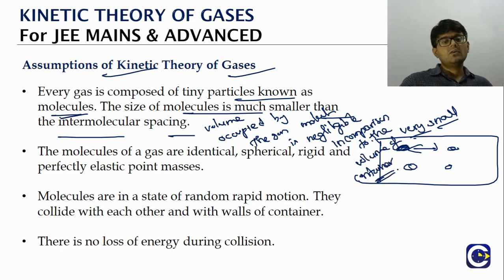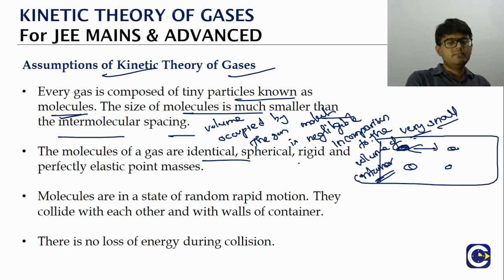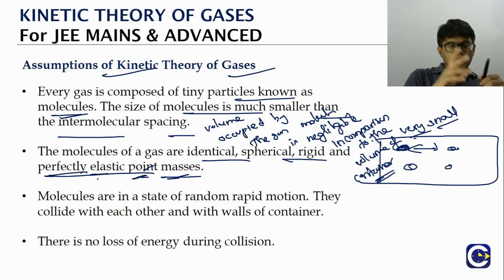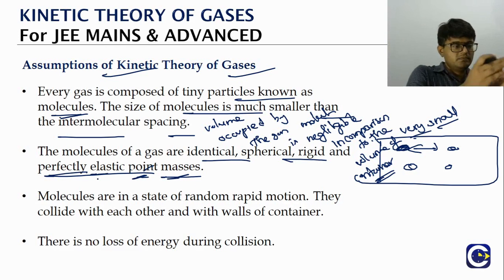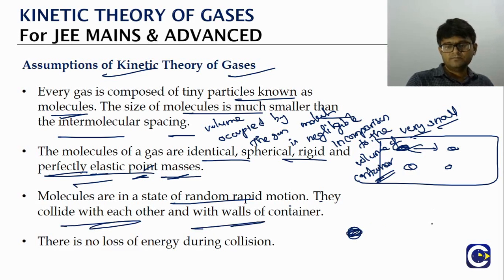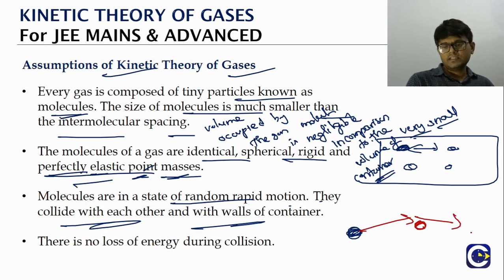The molecules of a gas are identical, spherical, rigid, and behave elastically. We treat them as point masses because we neglect their actual volume. Elastic behavior is associated with their collisions — both with each other and with the walls of the container. The molecules are in a state of constant, random, rapid motion.